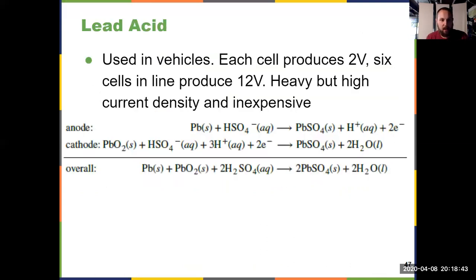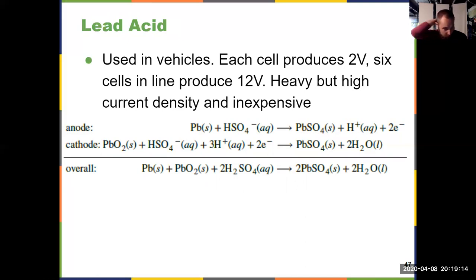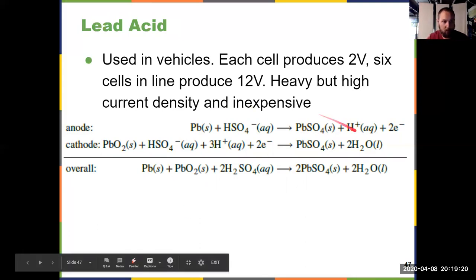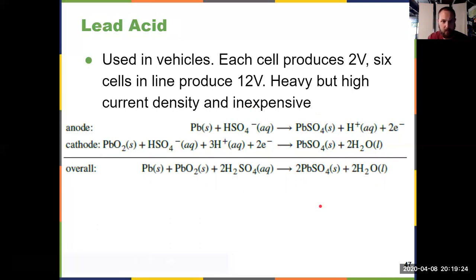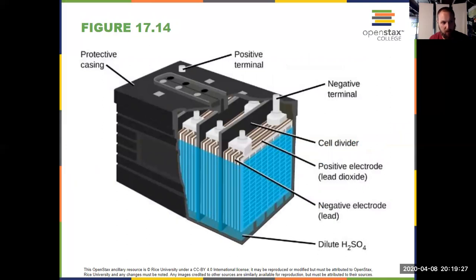Lead-acid batteries are used in cars — specifically to start an internal combustion engine vehicle. They're made up of six cells in line, two volts per cell, for a total of 12 volts. They are heavy but have a really high current density and are also cheap. Like other battery types, they are caustic and contain lead, so you need to dispose of these properly as well.